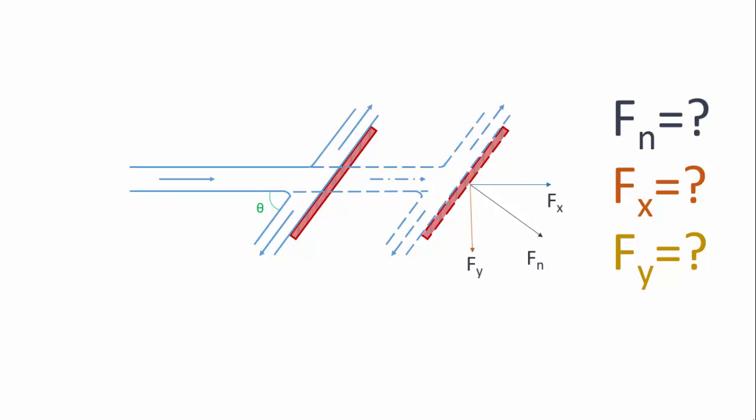As the plate is moving with a velocity u, and the water jet is impinging with a velocity v, the relative velocity is v minus u.